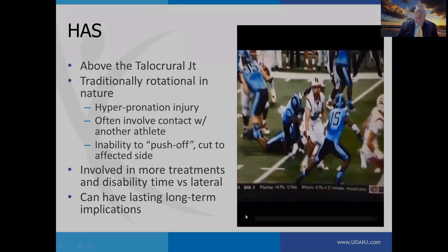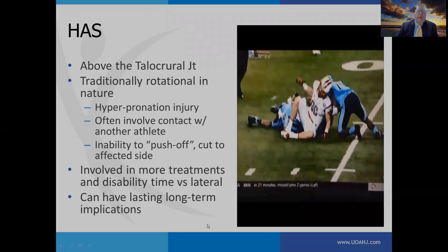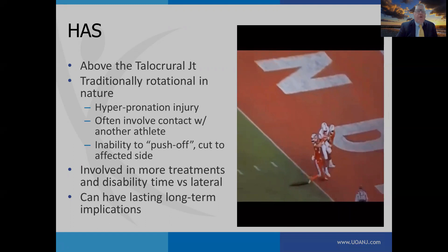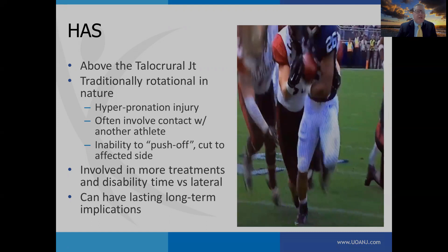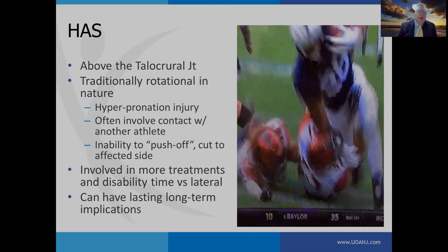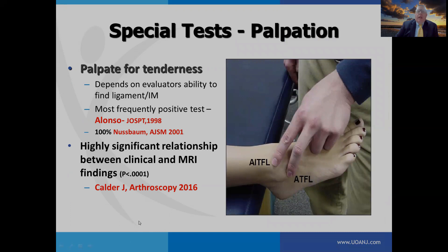Traditional high ankle sprains occur above the talocrural joint and are traditionally rotational in nature. They often involve contact with another athlete, and the chief complaint is inability to push off or cut to the affected side. They involve more treatments and disability time versus lateral sprains, and can have lasting long-term implications.